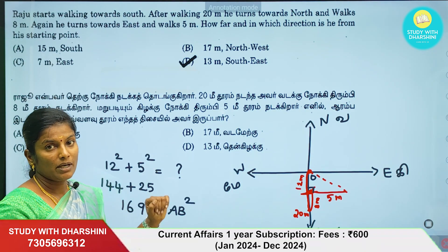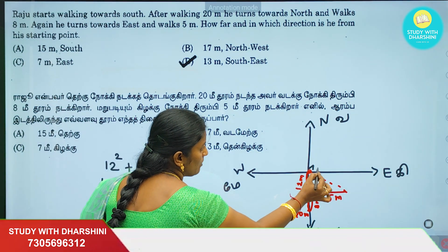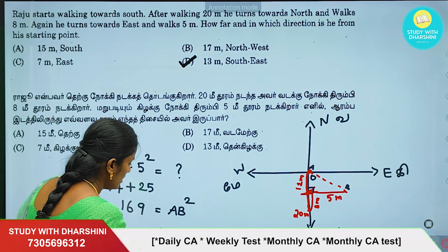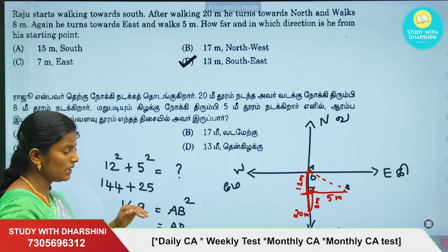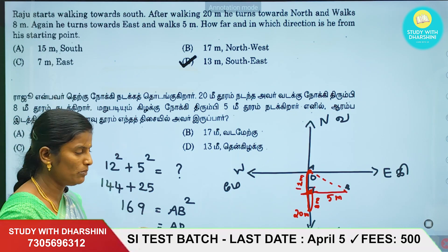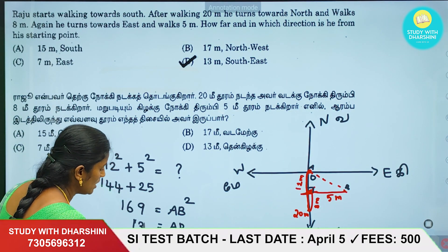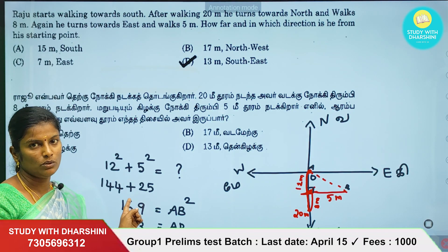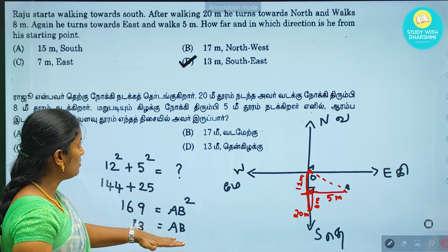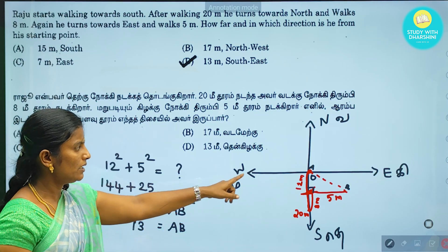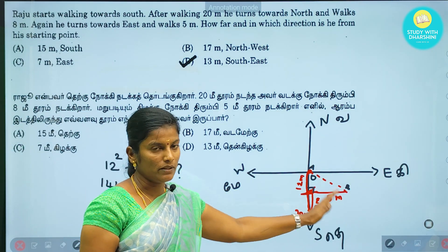We have to find AB squared. So now we take the square root. We need to find the square root of 169. What do we get? 13 × 13 equals 169. So the length is 13 meters.